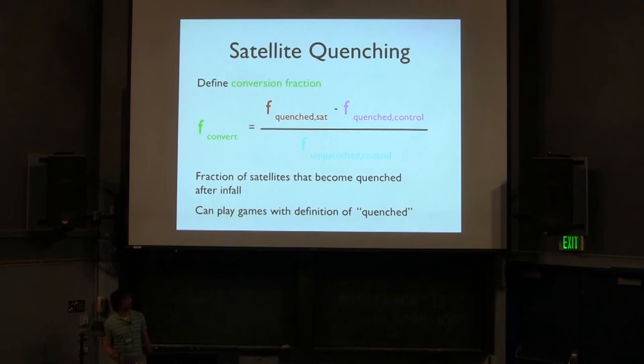So briefly I want to discuss how we quantified our quenching. We defined a parameter we call the conversion fraction. So you can see the equation for it there is F convert is equal to the fraction of satellites that are quenched minus the fraction of control objects that are quenched, so the excess fraction of quenched satellites divided by the fraction of control objects that are not quenched. So this is a fairly natural way to compare the satellites to the control sample. But if we take the control sample to be representative of the progenitors to the satellite galaxies, F convert can be thought of as the fraction of objects that become quenched between their time of infall and now. Another benefit of thinking about quenching in this way is that we can play games with what we consider quenching. So our fiducial definition of quenching in terms of satellite objects is something that has a specific star formation rate less than 10 to the minus 11 inverse years. Then we can ask questions like, what is the fraction of vigorously star-forming objects that become quenched, that have their star formation cut to a moderate level or cut off entirely upon infall.